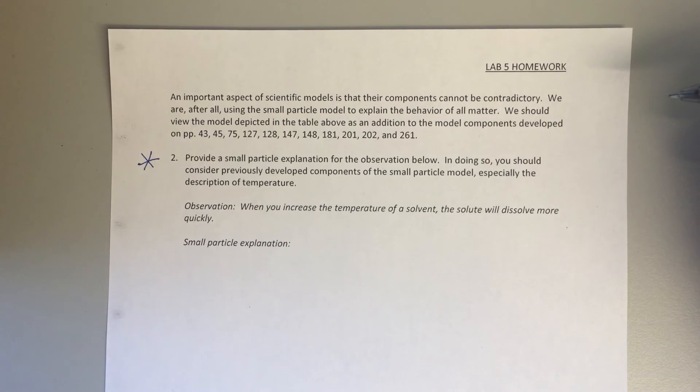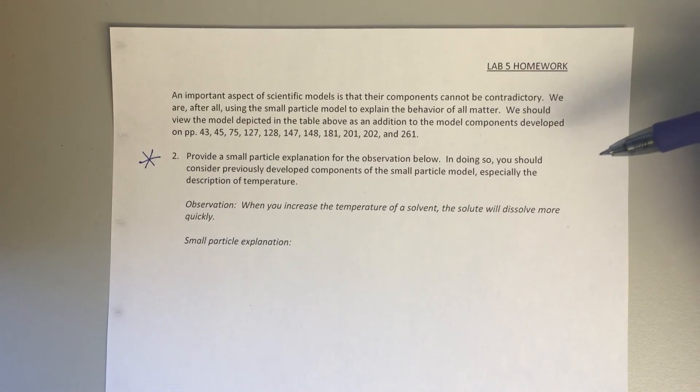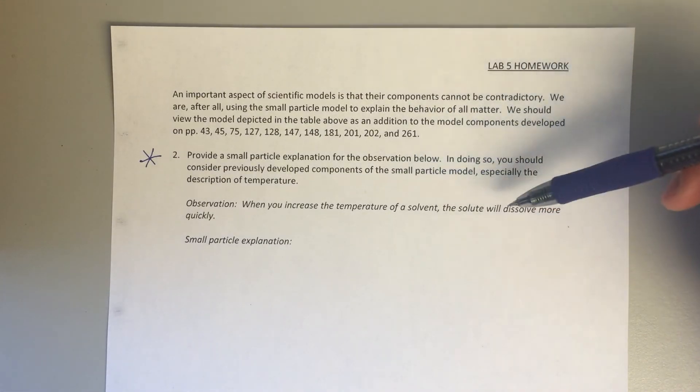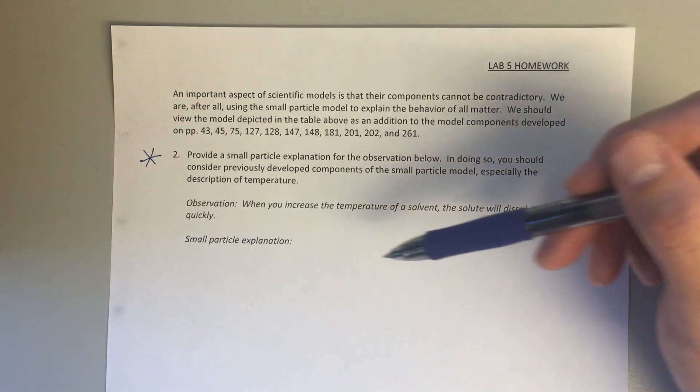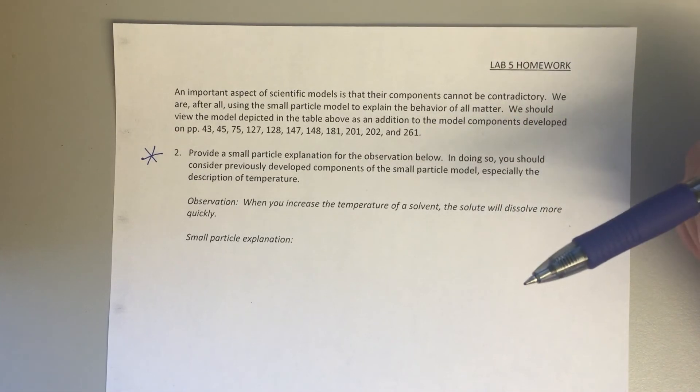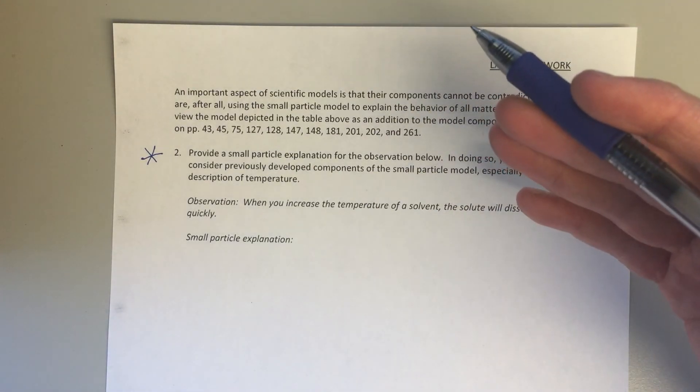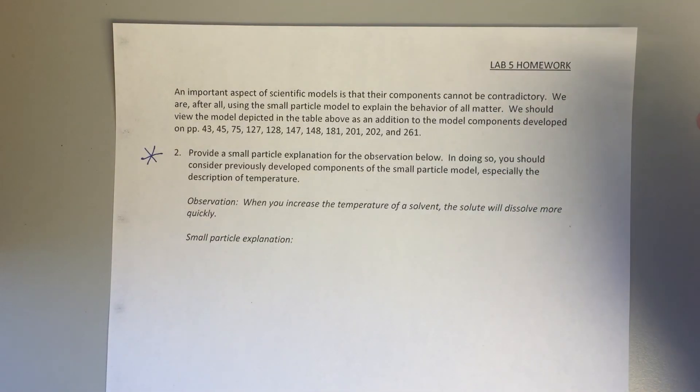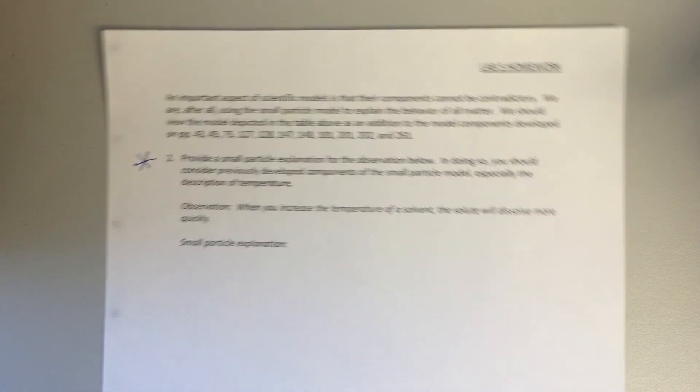It says, 'Provide a small particle explanation for this observation,' and the observation is: When you increase the temperature of a solvent, the solute will dissolve more quickly. So we really want you to think about this from a small particle point of view. One, what happens when I increase the temperature of a solvent—what's that going to do on a small particle level? Then two, how would that increase the rate at which the solute dissolves? How is the increase in temperature directly related to this particle does this, this particle does this, to the overall observation that the solute dissolves more quickly? So again, this is a great question—I think I really enjoyed this question, so spend some time on that, and that's it for lab 5.